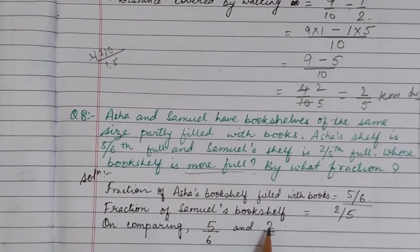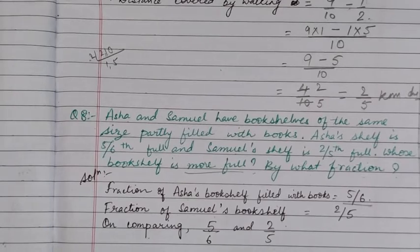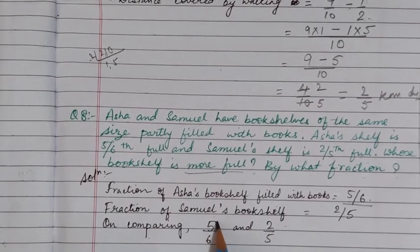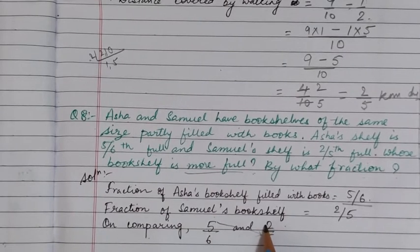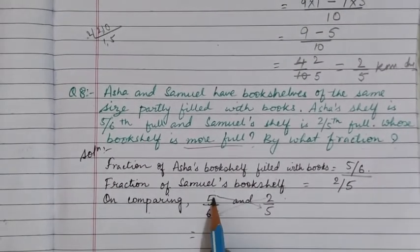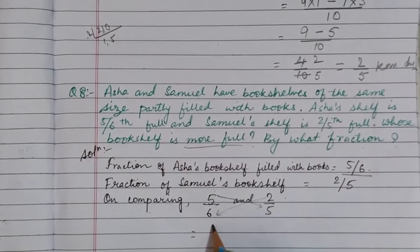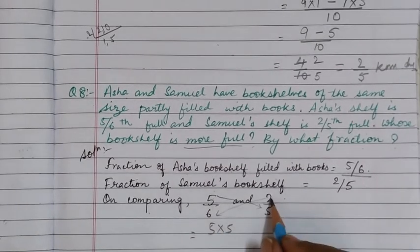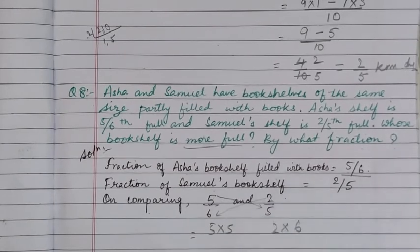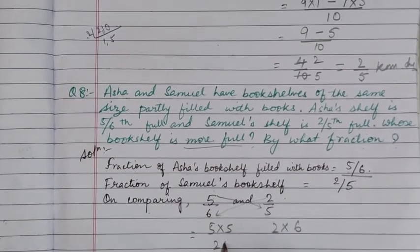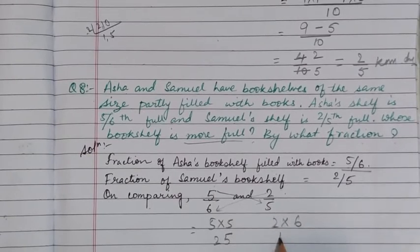In both these fractions, the numerators and denominators are different. So we are going to compare by doing cross multiplication — we multiply the numerator of the first fraction with the denominator of the second, and the numerator of the second with the denominator of the first. So we write 5 into 5 on one side and 2 into 6 on the other. Now 5 fives are 25 and 2 sixes are 12.